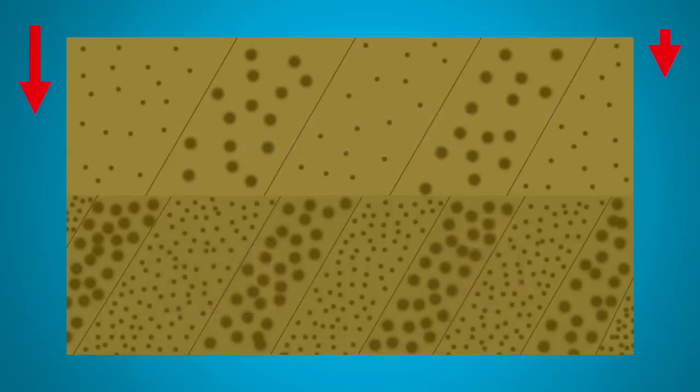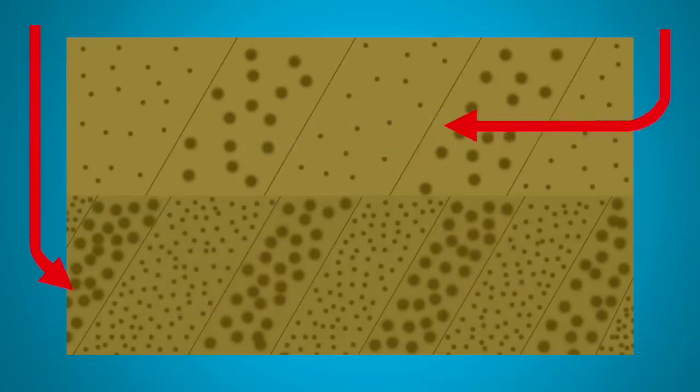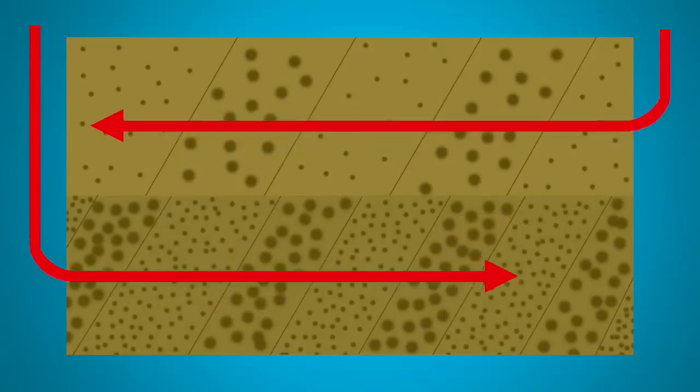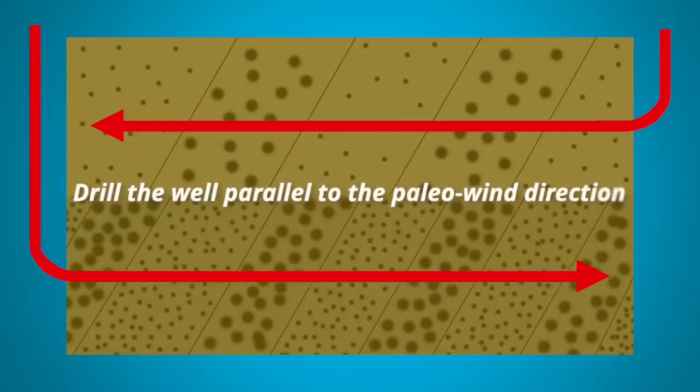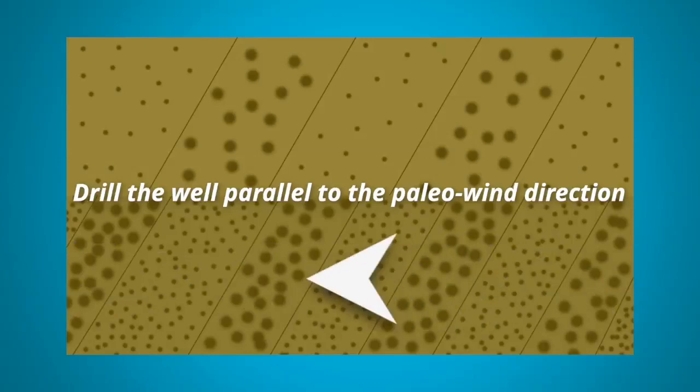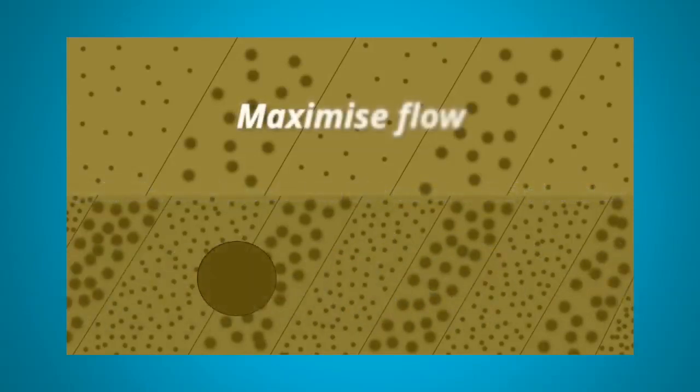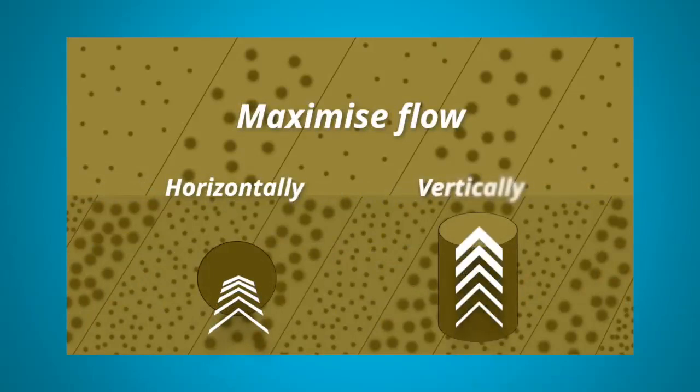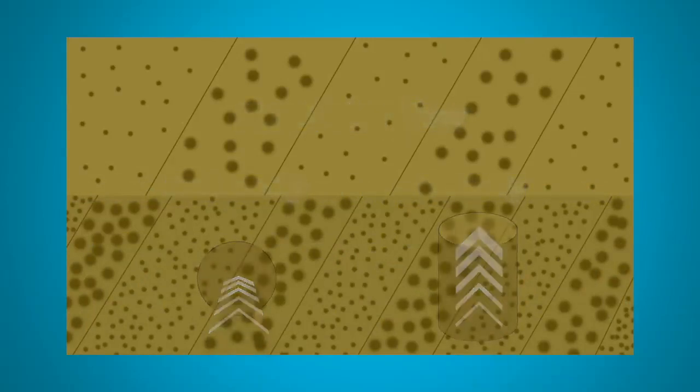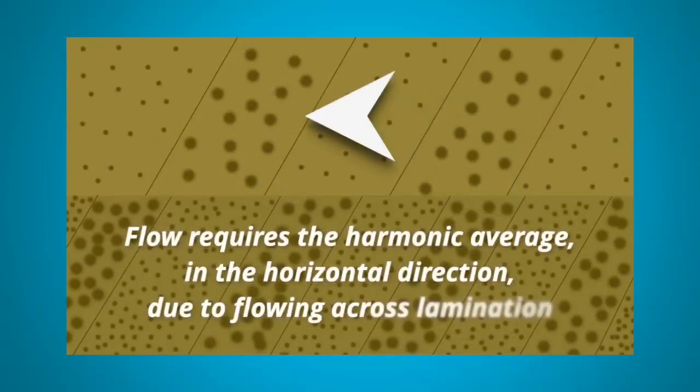This is behind the reason we drill horizontal wells in our North Sea Rot-Ligander reservoirs, parallel to the paleo wind direction. So we would drill the well parallel to the paleo wind direction, and this would maximise the flow horizontally and vertically into the well. In the upper box, flow in this orientation would require the harmonic average in the horizontal direction because we are flowing across the lamination.